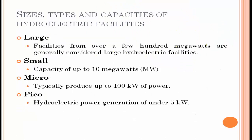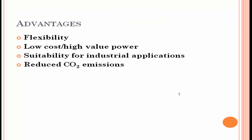In terms of sizes, we have large size hydroelectric power plants, small size, micro size, and pico size. Large size is a few hundred megawatts of capacity; small size is 10 megawatts; micro size is up to 100 kilowatts; and pico size is up to 5 kilowatts.